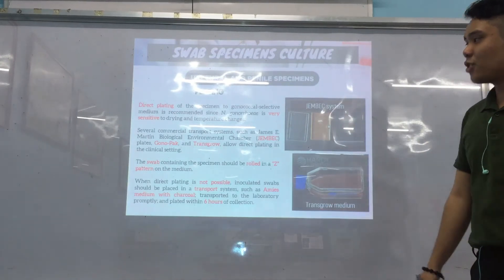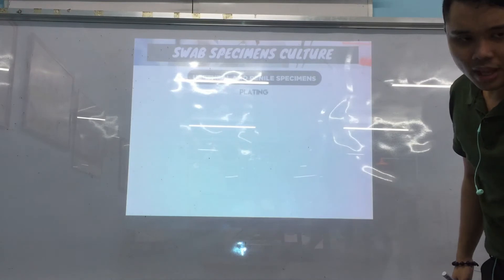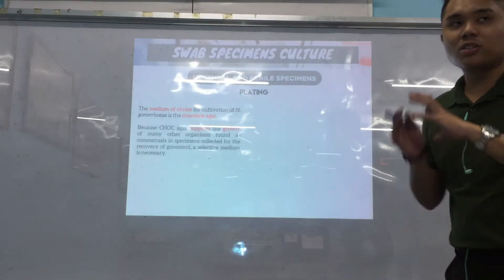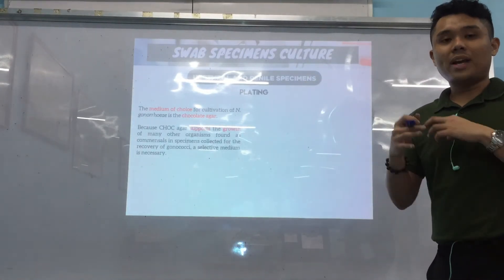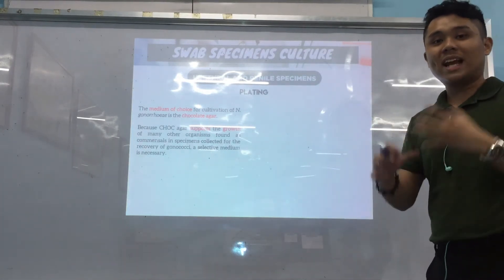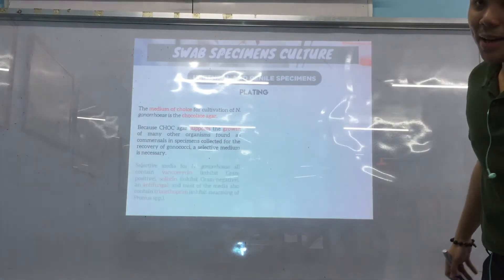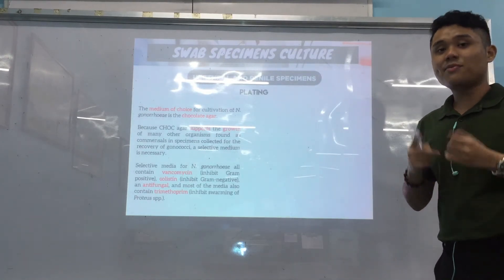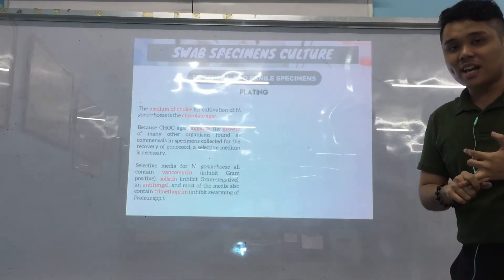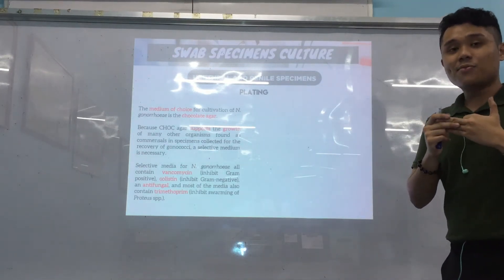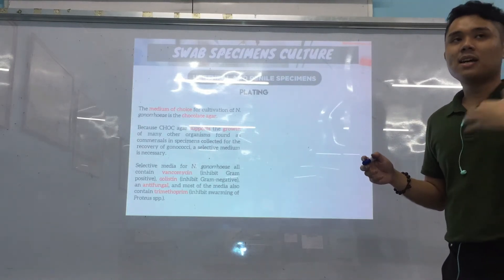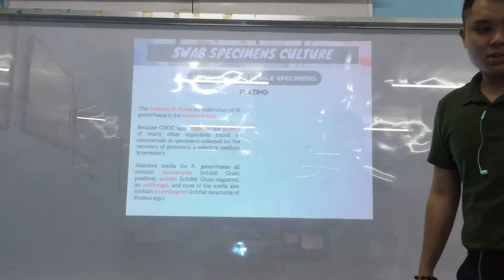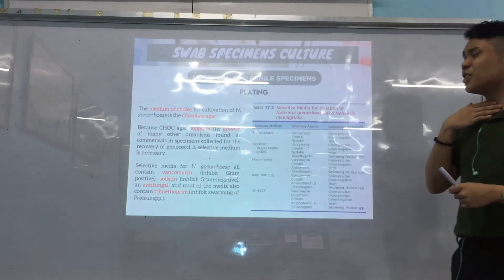The medium of choice for N. gonorrhoeae is chocolate agar. Because N. gonorrhoeae cultures can support many organisms, a selective medium is needed. Chocolate agar is still used but with selective supplements: vancomycin — inhibits Gram-positive organisms; colistin — inhibits Gram-negatives; an antifungal (anisomycin or amphotericin B, depending on the medium); and trimethoprim — to inhibit swarming of Proteus.